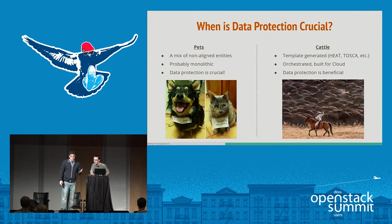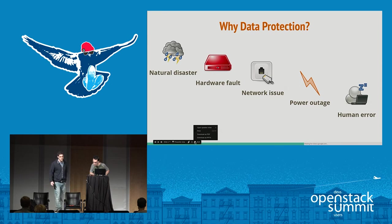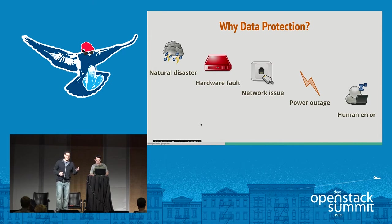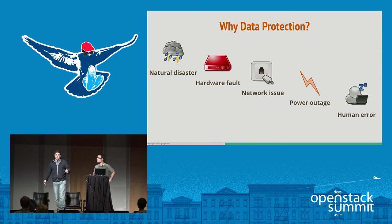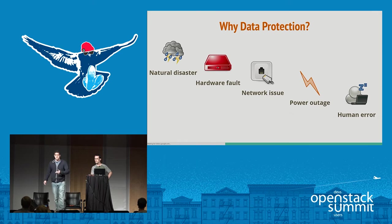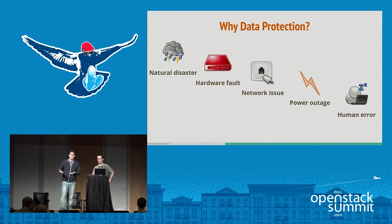Let's talk about why data protection. There are various events that can happen that cause you to need it — natural disasters, hardware faults, hardware failures — but one of the most common ones is power outages and human errors, which means someone changed or manually modified something, and that causes you to need to go back to a previous point in time.